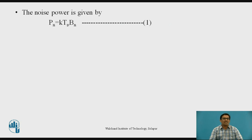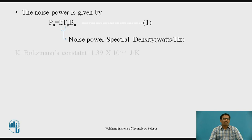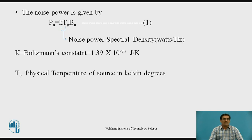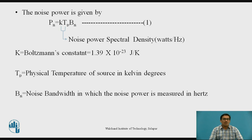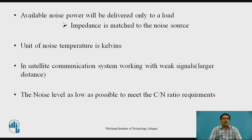The noise power is given by the equation Pn = K × Tp × Bn. This K and Tp product is called the noise power spectral density, and its unit is watts per Hertz. Where K is Boltzmann's constant equal to 1.39 × 10⁻²³ Joule per Kelvin, Tp is the physical temperature of the source in Kelvin, Bn is the noise bandwidth in Hertz, and Pn is the available noise power in watts. Available noise power will be delivered only to a load when its impedance is matched to the noise source. The unit of noise temperature is Kelvin.